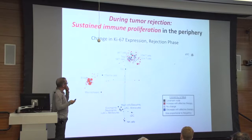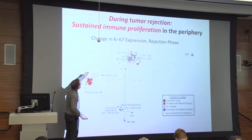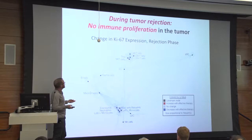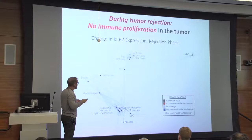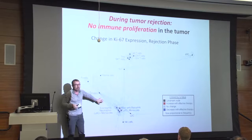This paper came out in Cell about a month ago. The big first story was that during tumor rejection there is a sustained immune proliferation in the periphery — it was actually happening out in the periphery. The Ki-67 levels of expression show huge changes in these cell populations in the periphery during an effective response. Interestingly, in great contrast, very little was going on in the tumor itself — very little cell division. The cell division is happening outside and then probably infiltrating into the tumor to carry out the function.